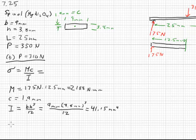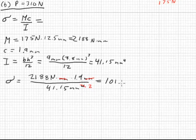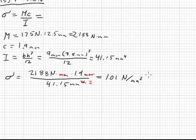Once all these are calculated, our stress equals 2188 newton-millimeters times 1.9 millimeters, all over 41.15 millimeters to the fourth. The units cancel out - we have millimeters times millimeters on top, millimeters to the fourth on the bottom, so it becomes millimeters squared. So our stress at fracture will be 101 newtons per square millimeter, which is 101 megapascals.